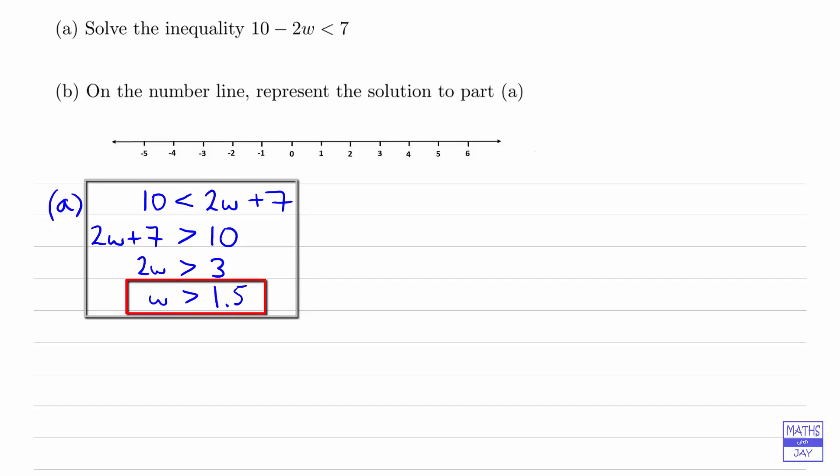Another way would be to start off by subtracting 10 from both sides. So let's see what happens if we do that. So subtracting 10 from the left-hand side, we'd get minus 2w is less than 7 minus 10, so negative 3.